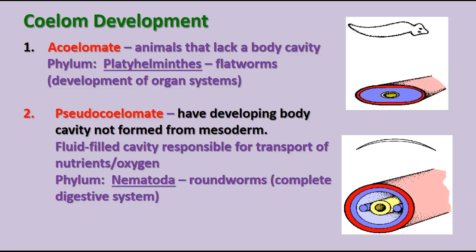Once the animal embryo has three layers of cells, there are three different ways the embryo can continue to develop. Some develop into animals that are acoelomates, meaning they don't have a body cavity. This is only found in phylum Platyhelminthes, the flatworms. They do have the beginning of organ systems — a primitive nervous system, a primitive circulatory system, and some structures for getting rid of nitrogen waste — but there is definitely no body cavity for organs to reside in.